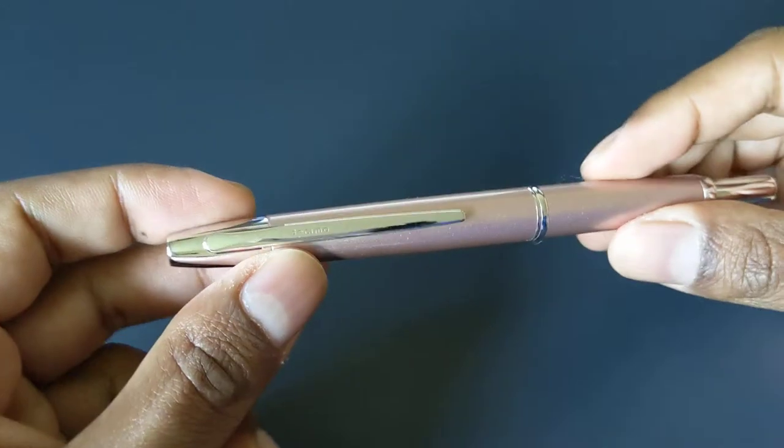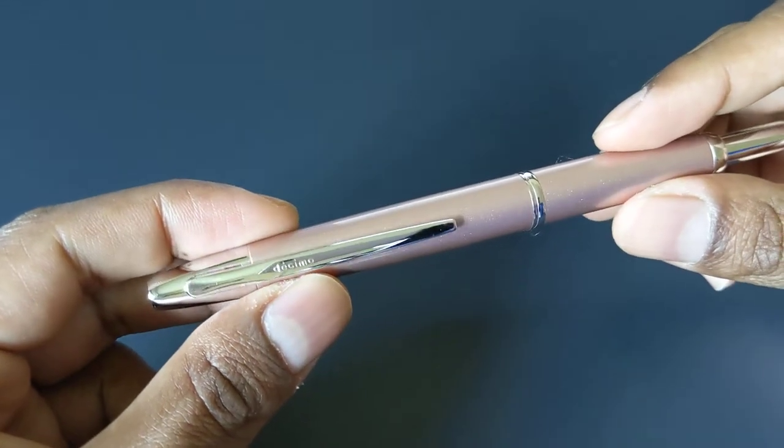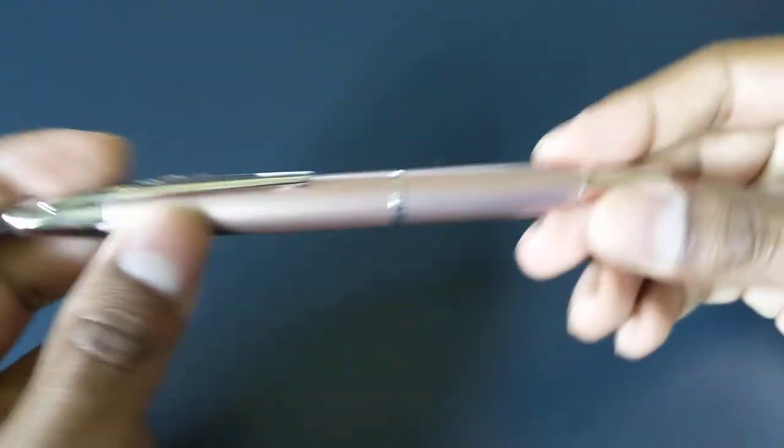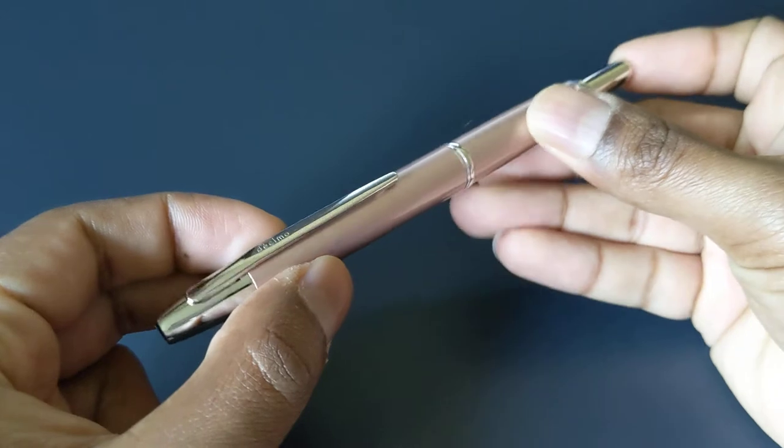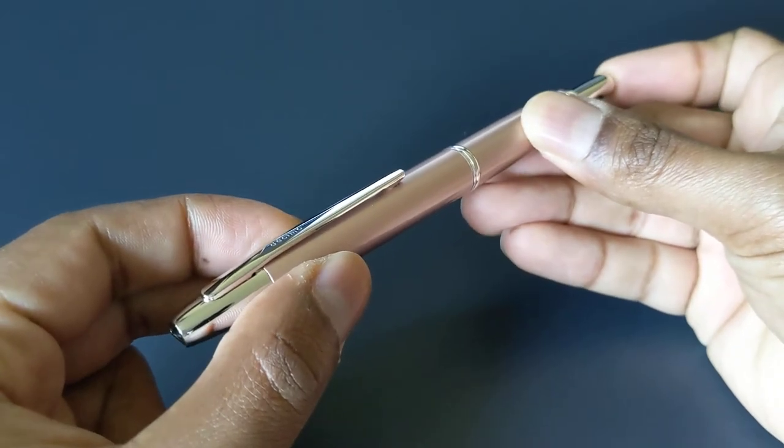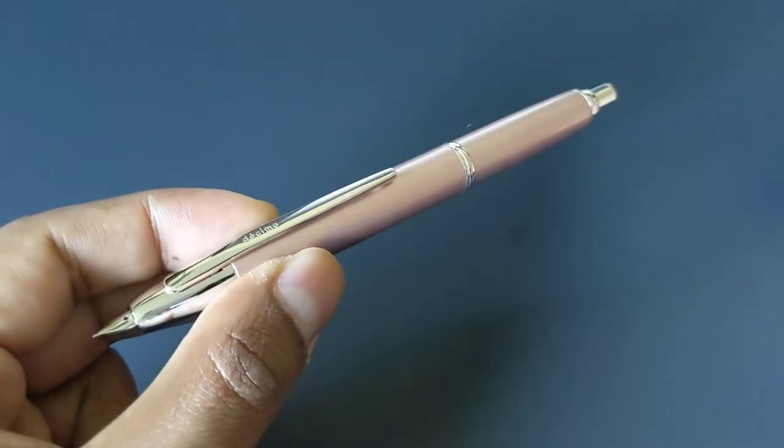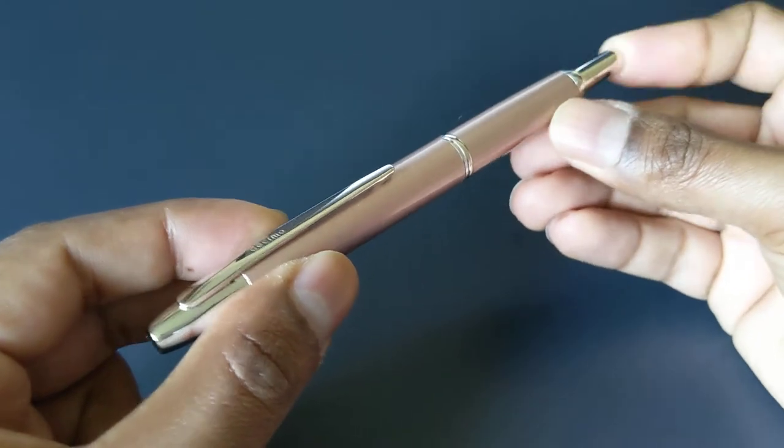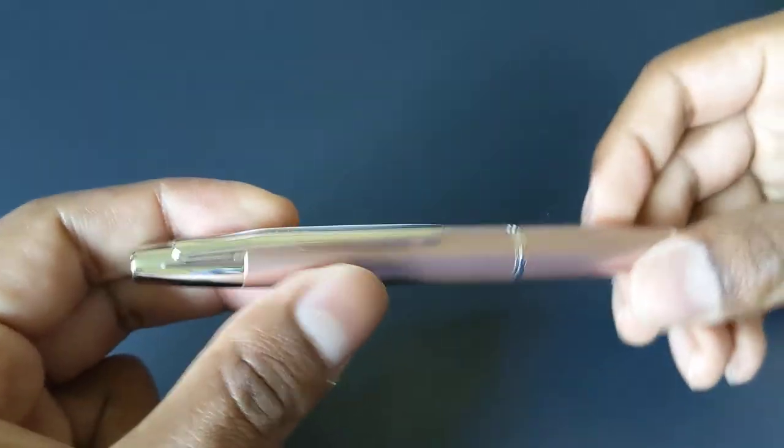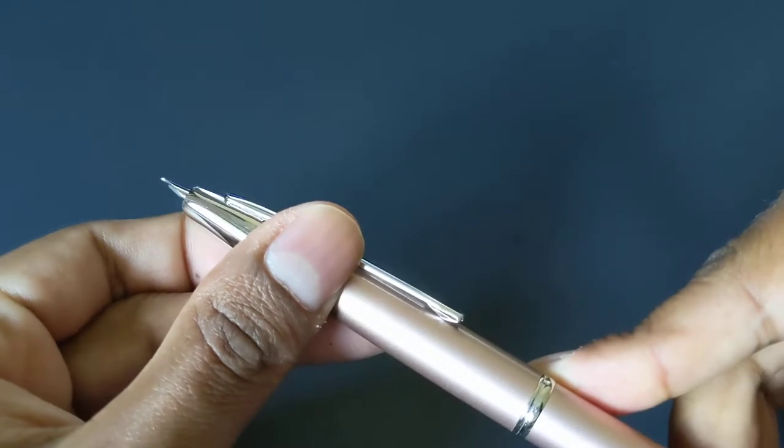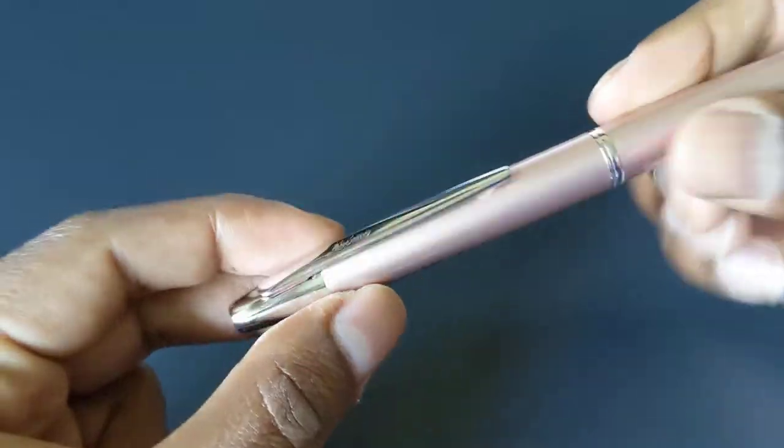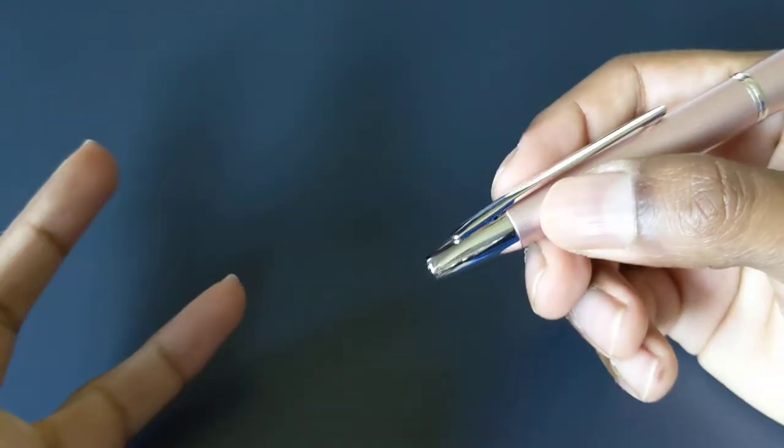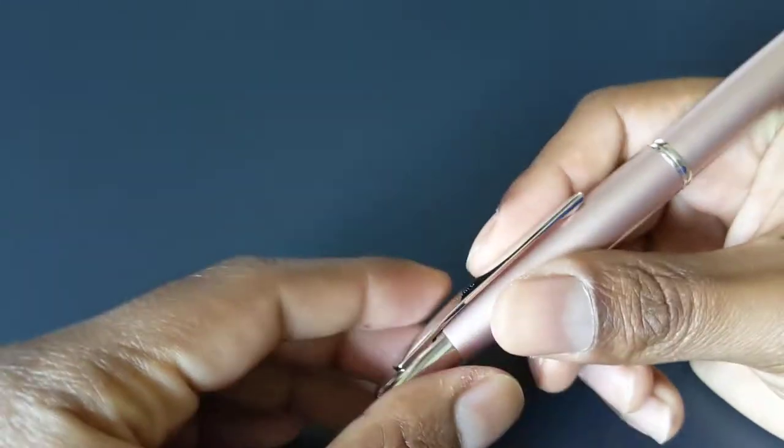Next pen, which is gonna be a little bit different than the other ones I talk about, is the Pilot Vanishing Point. This is a Pilot Decimo. It's actually my wife's pen and it's of course a retractable mechanism to get the nib out of its housing that it's stored in when you're not writing with the pen.